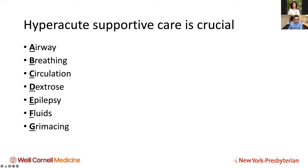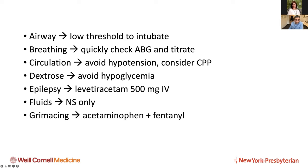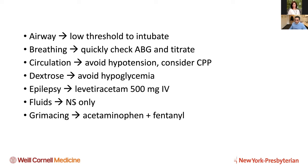This is my mnemonic for acute treatment of any acute brain injury. Have a low threshold to intubate these patients — GCS eight or less, just intubate them. You don't want to put them on a ventilator and walk away and get a blood gas three hours later — that's a recipe for disaster. Quickly check an ABG, titrate the vent, make sure you're not letting the PCO2 get out of range. Avoid hypotension at all costs, avoid hypoglycemia. Start Keppra — there's decent evidence for a week of prophylactic AEDs and it's probably harmless. Don't use hypotonic saline, as we don't want to worsen cerebral edema. Treat pain — Tylenol plus fentanyl is a good combo, short-acting, and you can always stop it if you need to.